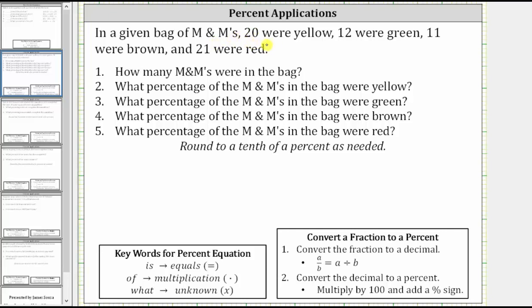In a given bag of M&Ms, 20 are yellow, 12 are green, 11 are brown, and 21 are red. Number one: how many M&Ms were in the bag?